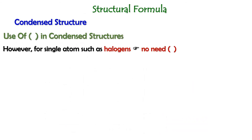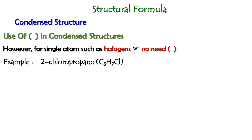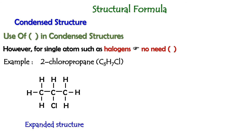If a molecule has single atoms such as halogens, we do not need to use bracket symbols. For example, if we have 2-chloropropane with the formula C3H7Cl, this would be the expanded structure, and if we convert it into condensed structure, the structure would be like this or like this.